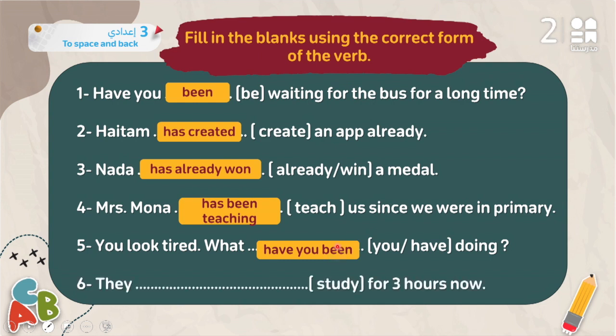Number six: 'They ___ study for three hours now.' The word 'now' means it's still happening at this moment — they started studying three hours ago and are still going. When something started in the past and is still going on until now, this is the present perfect continuous. Answer: 'They have been studying.'